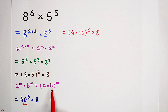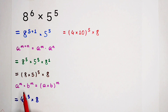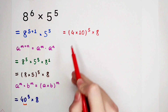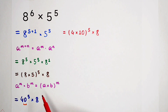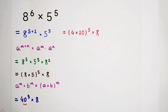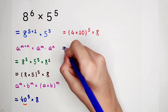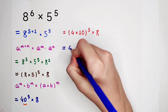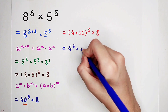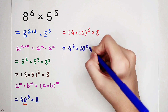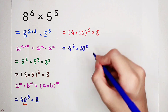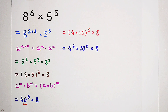By using this formula again — a times b, all to the power of m, equals a to the power of m times b to the power of m — since 40's last digit is 0, it can be written as 4 times 10. So we have 4 times 10, all to the power of 5, times 8. Substituting: a is 4, b is 10, m is 5, giving us 4 to the power of 5, times 10 to the power of 5. And 10 to the power of 5 is a nice number — it is 100,000.